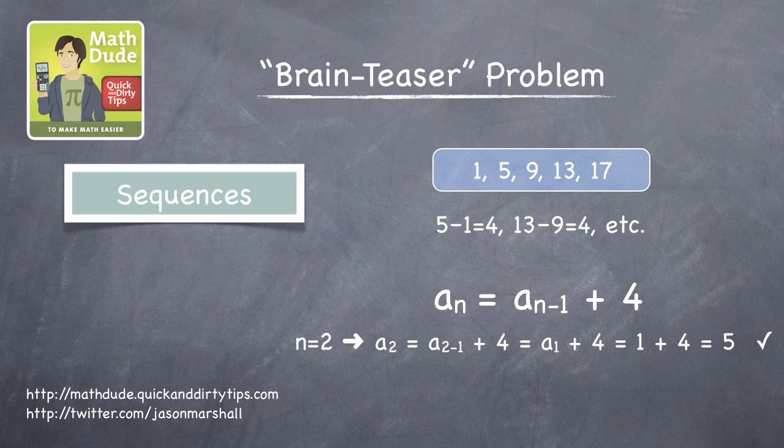For the third element, n equals 3. a sub 3 equals a sub 2 plus 4, which is 5 plus 4, that equals 9. It works again.